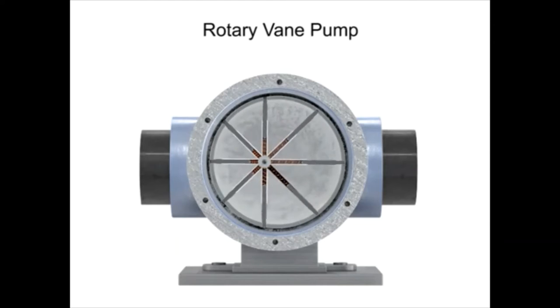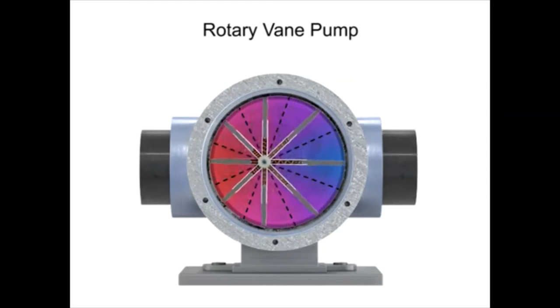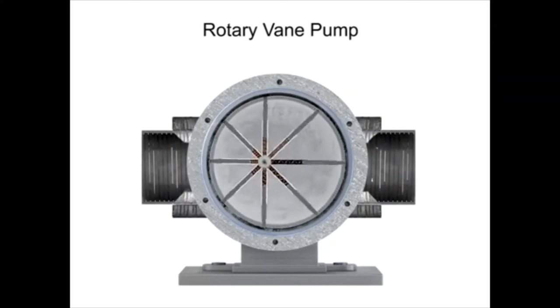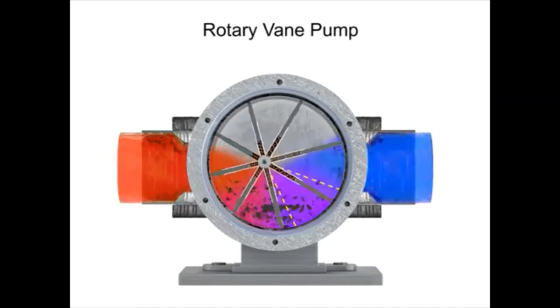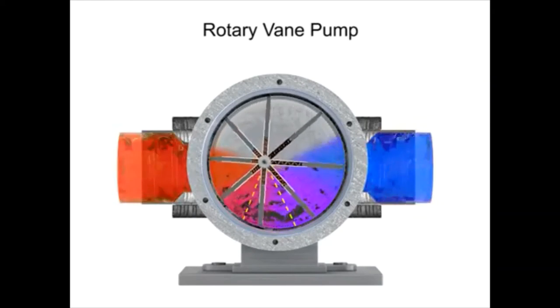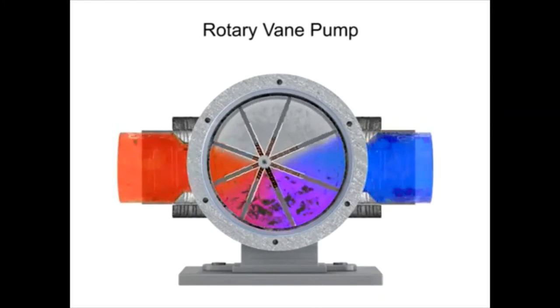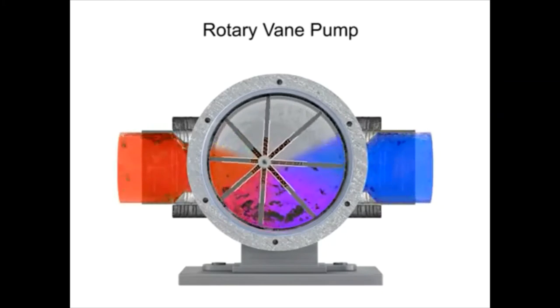As the vanes rotate, they create chambers of varying sizes within the pump. Fluid enters at the largest chamber. As the vanes rotate and retract, the chambers get smaller, forcing fluid to exit through the discharge port.